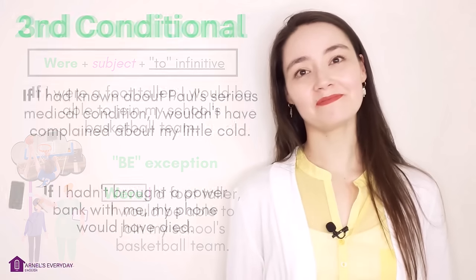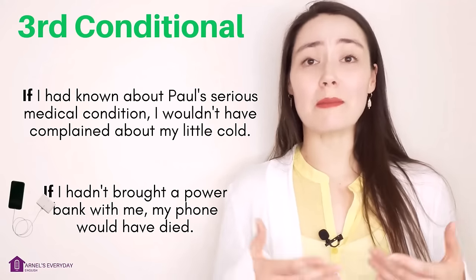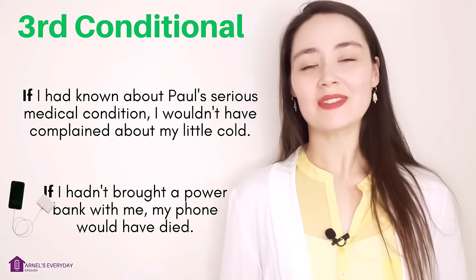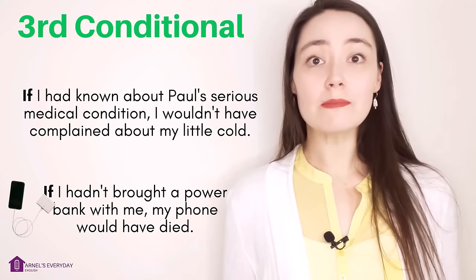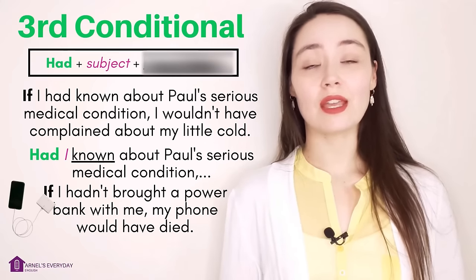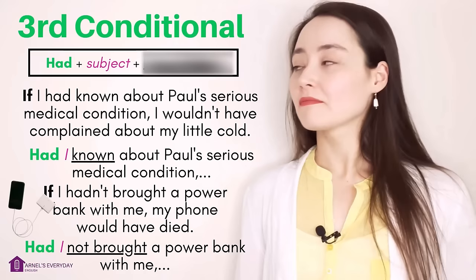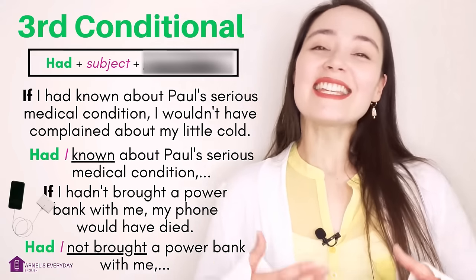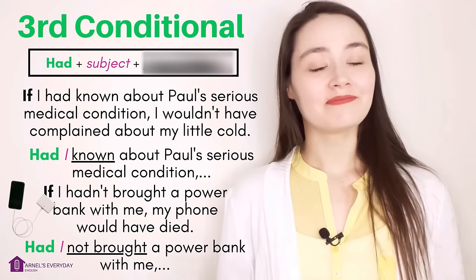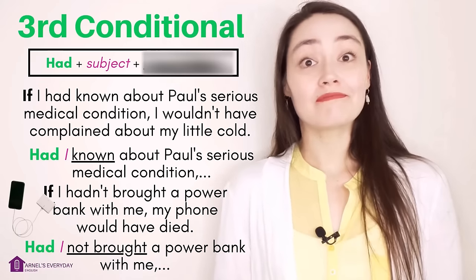Third conditional: 'If I had known about Paul's serious medical condition, I wouldn't have complained about my little cold.' 'If I hadn't brought a power bank with me, my phone would have died.' For the third conditional, you simply replace 'if' with 'had': 'Had I known about Paul's serious medical condition...' 'Had I not brought a power bank with me...' That is everything. Yes, there are other structures we can invert, but now you know how to spot them and why they're used. Give me an example in the comments below. Check out my blog and I can't wait to make another lesson for you. I hope this one helped you — see you next time.